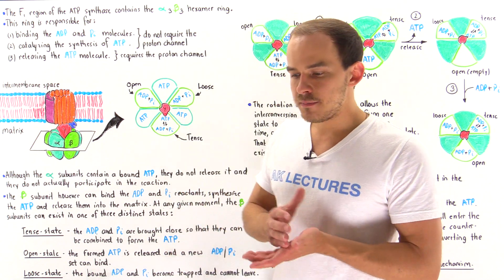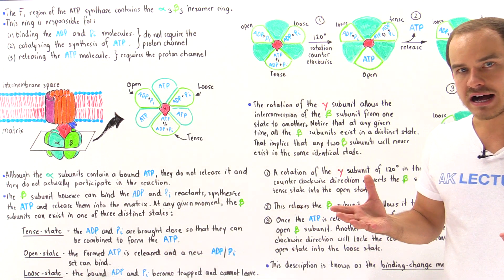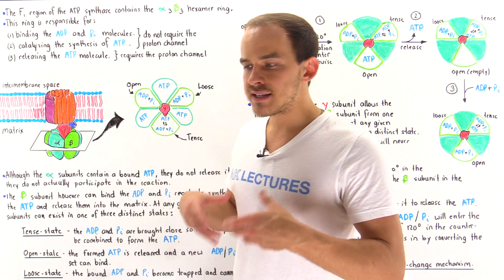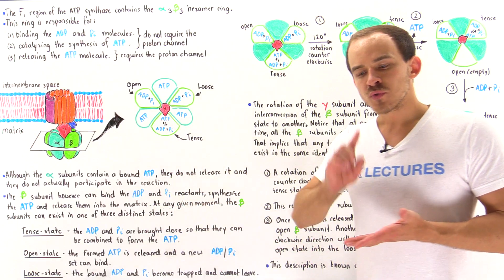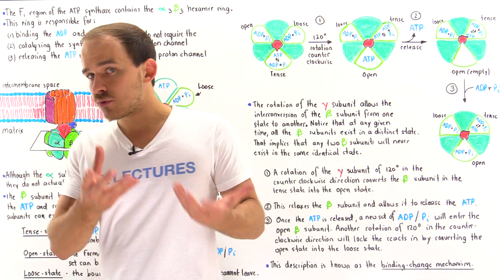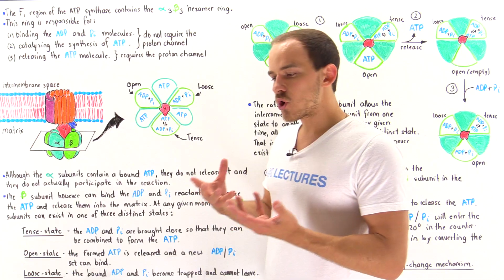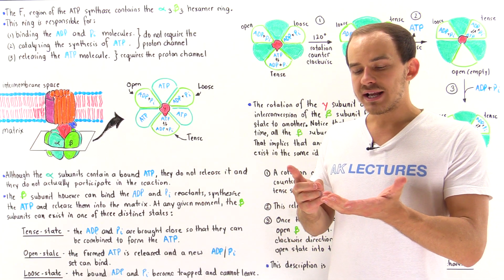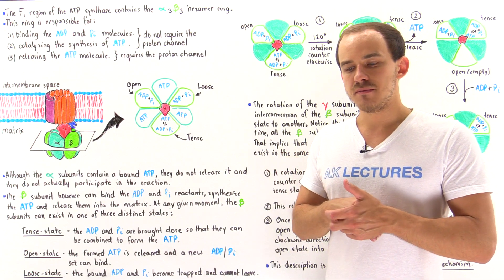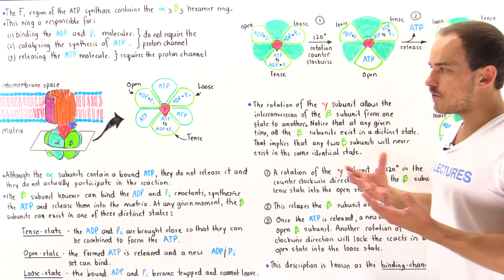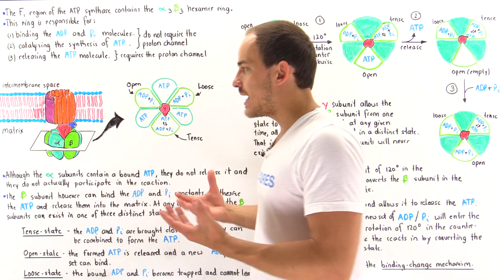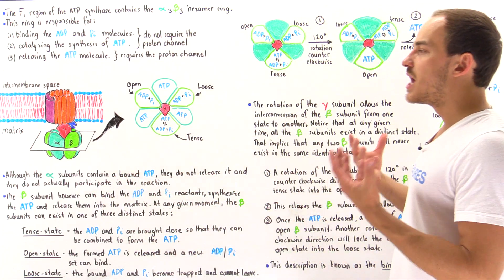Now that we know the structure of ATP synthase — complex 5 of the electron transport chain — let's discuss the mechanism of how ATP synthase carries out its function.